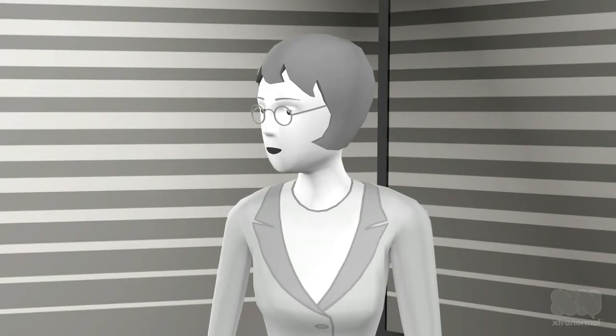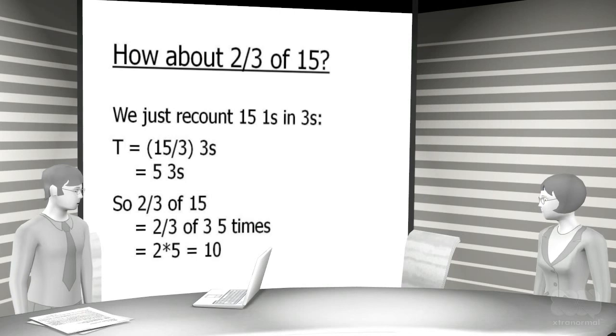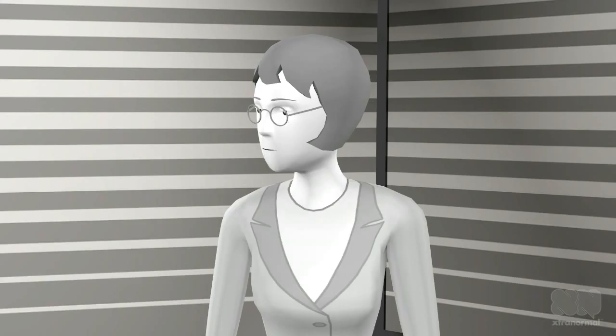But the recount formula only shows that two over three of three is two. How about two over three of fifteen? Well, you just recount fifteen ones in threes as fifteen over three threes, that is, as five threes. So two over three of fifteen is the same as two over three of three, five times, which is ten. Alan, can you briefly sum up your view on how to deconstruct fractions?